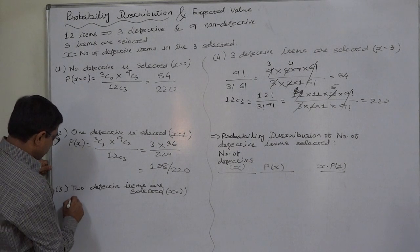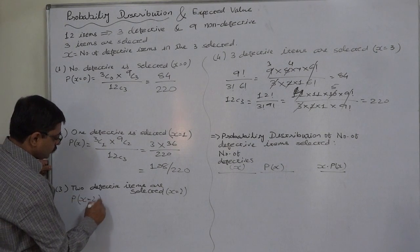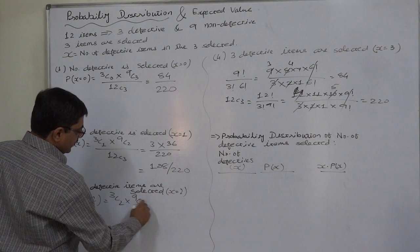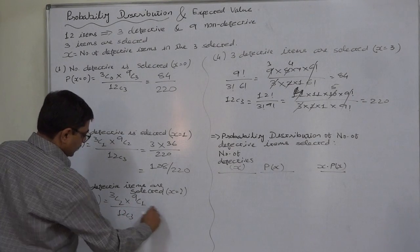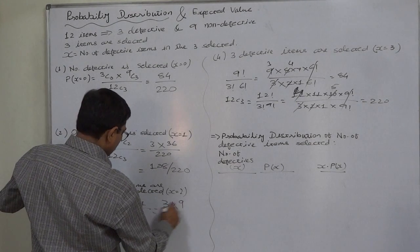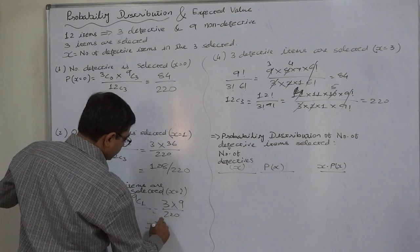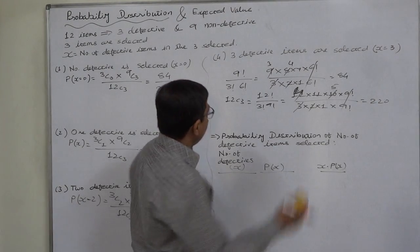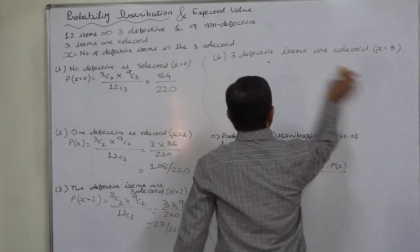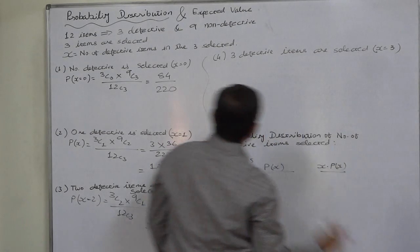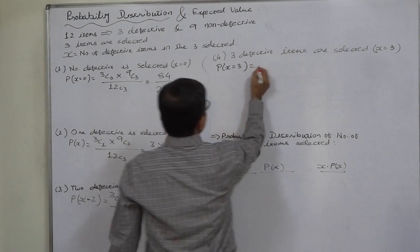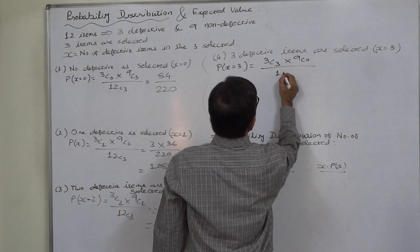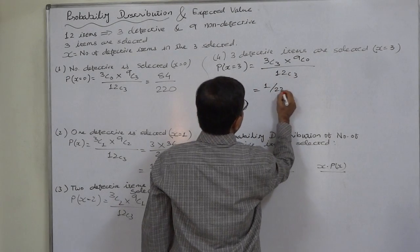For 2 defectives selected — that means 2 out of 3 defectives and 1 out of 9 non-defectives — that gives 3C2 × 9C1 = 3 × 9 = 27 upon 220, so P(X=2) = 27/220. And the last possibility: all 3 items selected are defective, giving 3C3 × 9C0 = 1 × 1 = 1, so P(X=3) = 1/220.